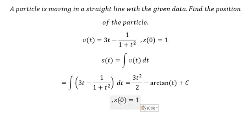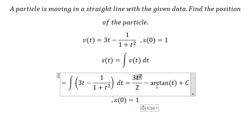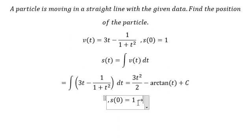That means when t equals zero, we put zero in here and here so we can find the value of C. So we have s(0), now we put zero in here and here.